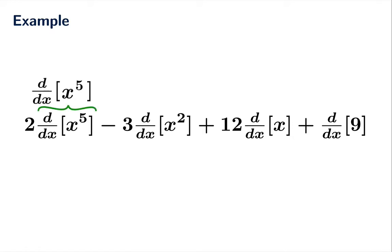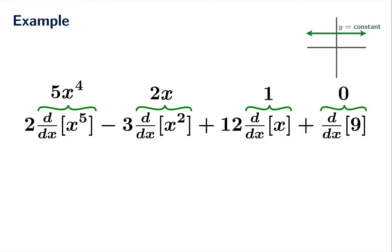The derivative of x to the fifth is 5x to the fourth. The derivative of x squared is 2x. The derivative of x is 1, and you can either think of that as the power rule although you really shouldn't need to do that. The better way to think about this is if you look at the graph y equals x, the tangent slopes are 1 everywhere, so the derivative of x you should know is 1. And the derivative of 9 is 0 because the derivative of a constant function is 0.